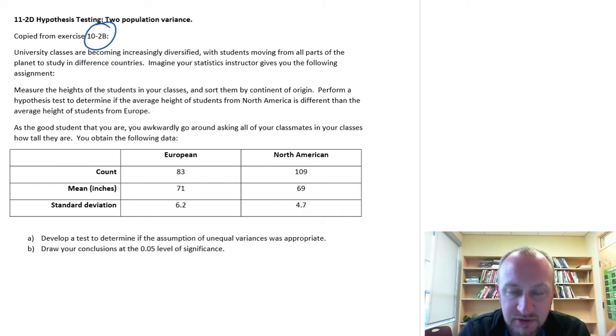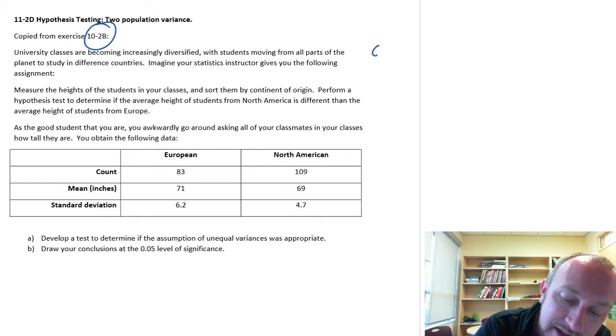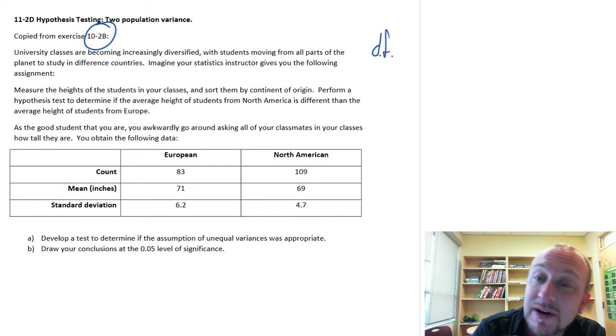If you recall module 10, this was a section where we looked at doing a hypothesis test on a difference in means. When we perform a t-test for a difference in means, we needed to concern ourselves with the degrees of freedom. When we were calculating the degrees of freedom, there were two ways of doing it.